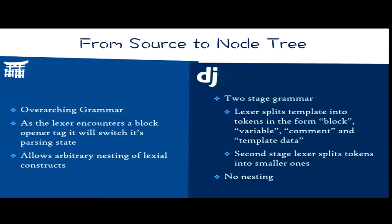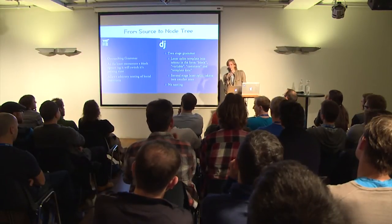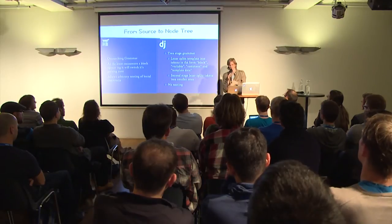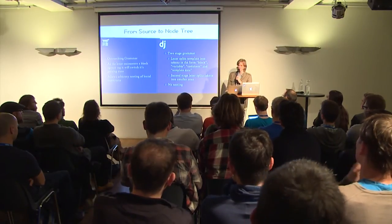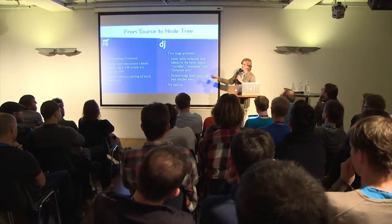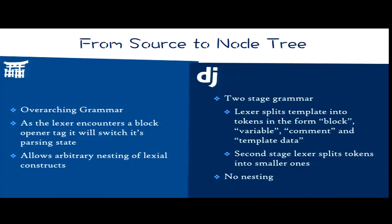In Django, things work very differently — it has a two-stage grammar. The lexer splits your whole template with a regular expression into things that look like a variable, things that look like a block, things that look like a comment, and everything else is template data. Variables and for-blocks cannot be multi-line, which is really frustrating when you nest a lot of filters together and end up at column 120. Comments are also single-line unless you use the block comment. The real problem is that the second-stage lexer is manually written within each block tag, and as such is wildly inconsistent.